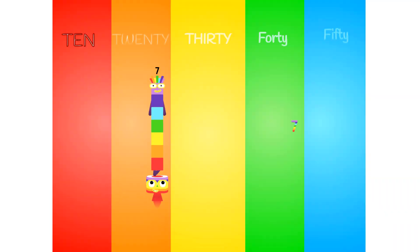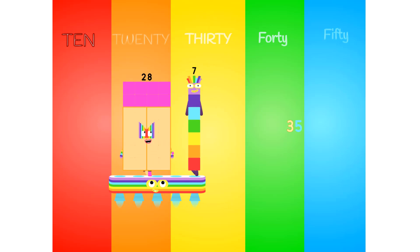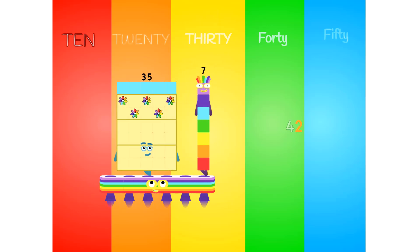1 times 7 is 7. 2 times 7 is 14. 3 times 7 is 21. 4 times 7 is 28. 5 times 7 is 35. 6 times 7 is 42.